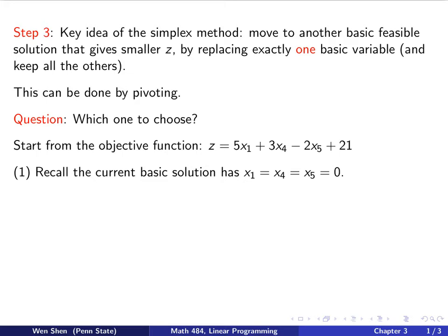Let's start from the objective functions. This is our example. In canonical form, z is expressed in terms of non-basic variables: x1, x4, and x5, plus a constant 21. Recall that in the current canonical form, we have the basic solution, and in the basic solution, all the non-basic variables are zero. So x1, x4, x5 are zero.